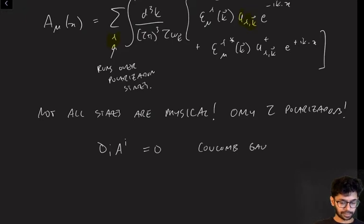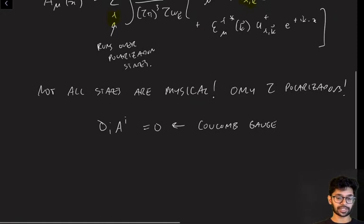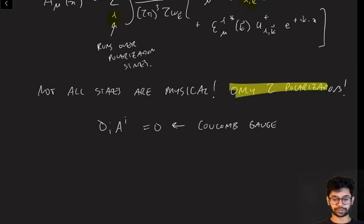And it's a particularly nice gauge to discuss the physical Hilbert space. Coulomb gauge is different from Lorentz gauge because it's not Lorentz invariant, so it's not great for doing path integrals, but it turns out to be very useful for understanding the canonical structure of the theory.